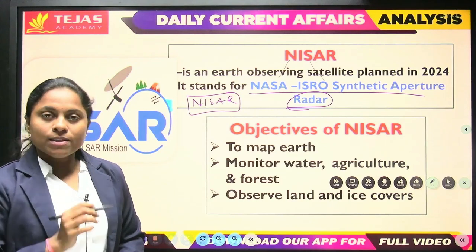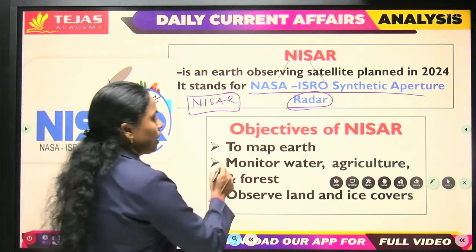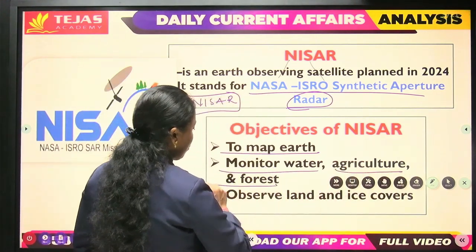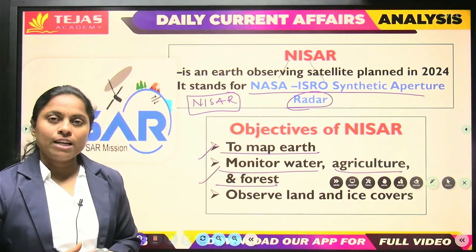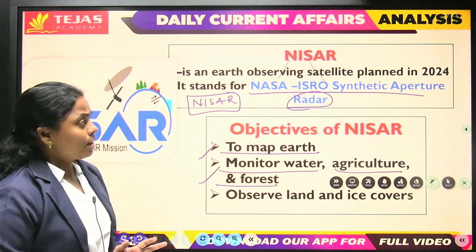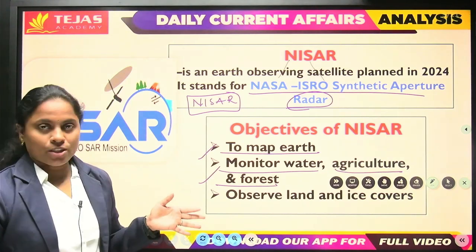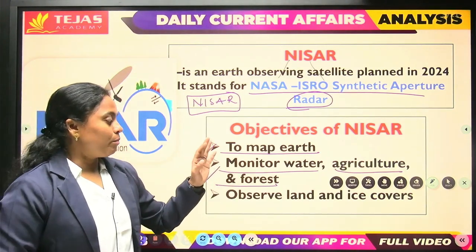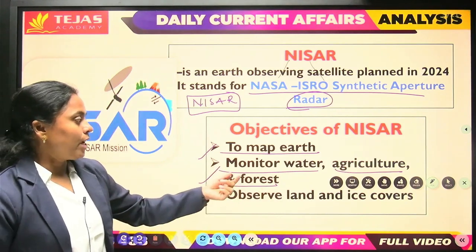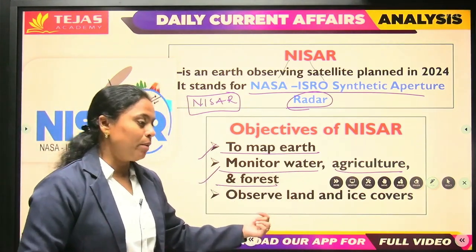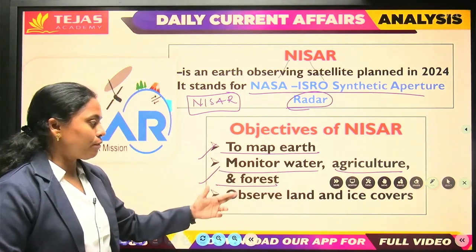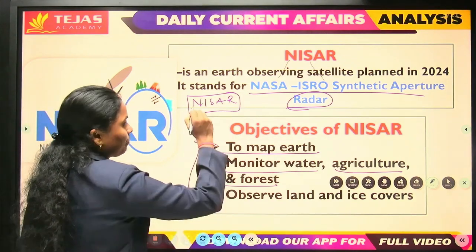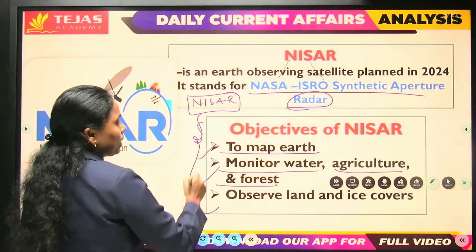The purpose and significance of NISAR is to study and map the earth, to monitor water, agriculture, and forecast. We are using satellites for various applications not only for exploring space but also for human well-being — monitoring water, agriculture, forecasting, and observing land and ice covers.